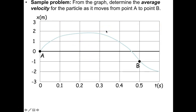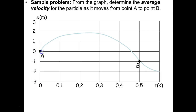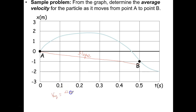Here's a sample problem: from the graph, determine the average velocity for a particle as it moves from point A to point B. We draw a straight line from A to B and find its slope. Average velocity equals change in position over change in time. The final position at B is negative 1, minus the original position of 0, divided by the elapsed time of 0.5 seconds. That gives negative 2 meters per second.